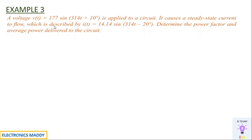Example three: voltage v(t) = 177 sin(ωt + 10°) is applied to a circuit causing a steady-state current described by a given current equation. Determine the power factor and average power delivered to the circuit. Looking at the equations, the angle associated with I is negative and with V is positive, meaning V leads I — confirming it is a series RL circuit.